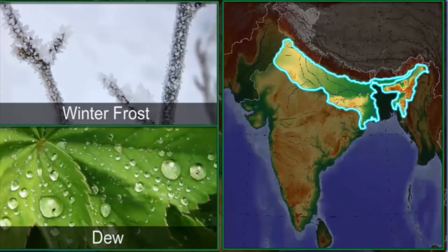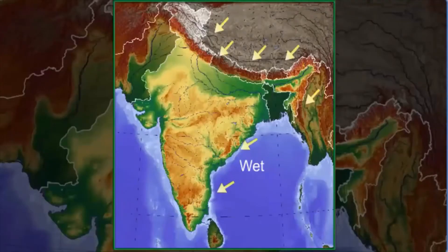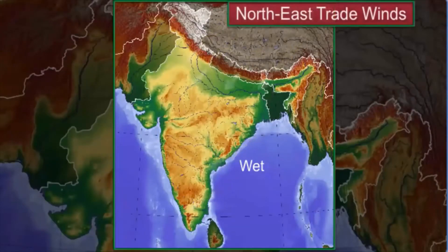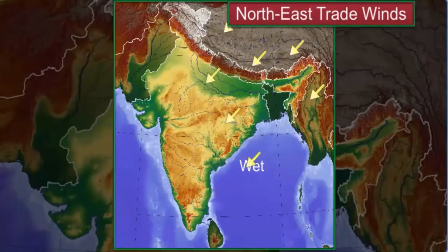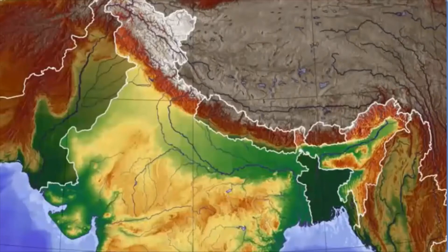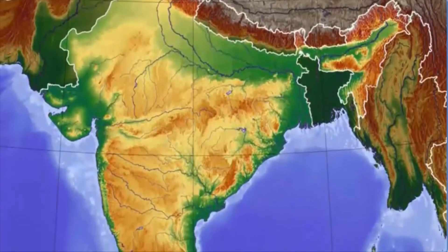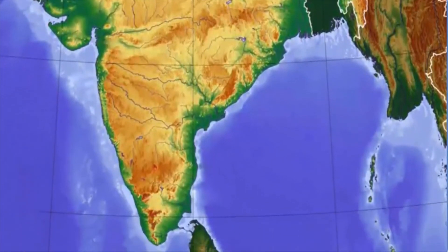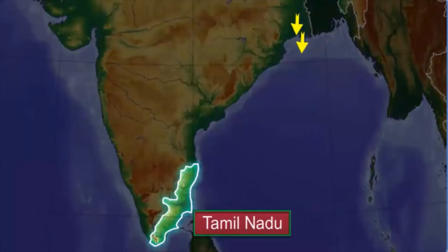During winter, the north-east trade winds blow over the country. As these winds blow from land to sea over most parts of India, they are dry; so in most parts of India the weather during winter is dry. However, in some parts of India like the coast of Tamil Nadu, the winds blow from the sea to the land; hence these places receive some amount of rainfall during the winter.